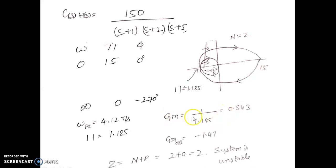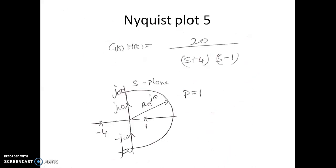The gain margin for this unstable system is less than 1, at 0.843, giving a gain margin in dB of minus 1.47—confirming the system is unstable. Similarly, the next case we will examine involves a transfer function with a negative term and a pole on the right hand side, which we will analyze in the next video.